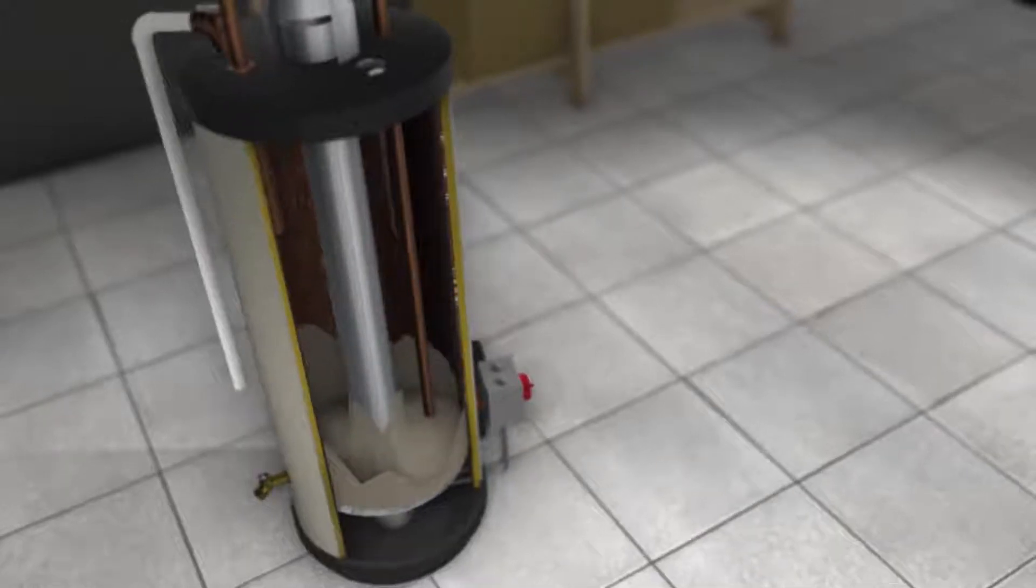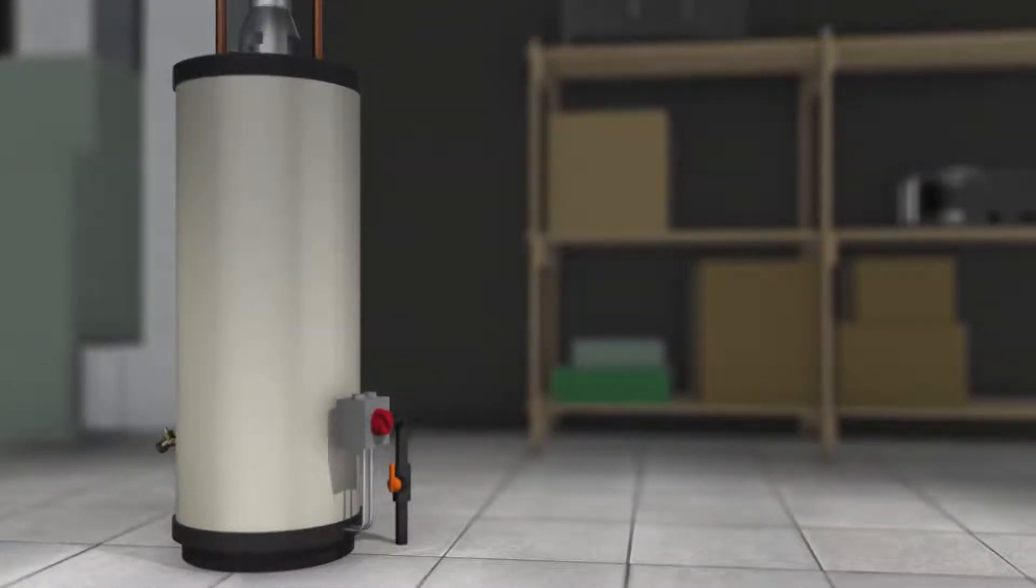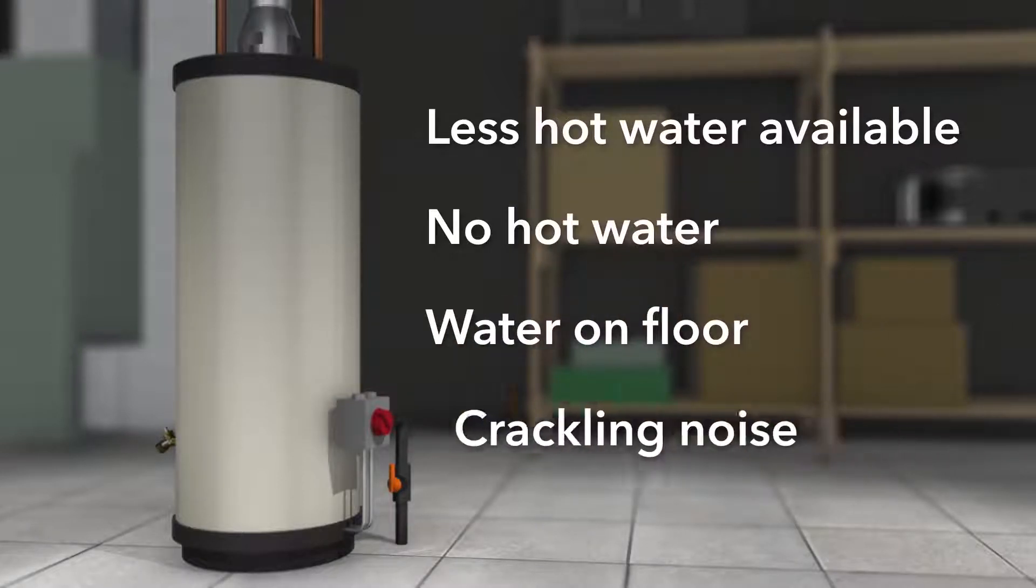How do you know if your water heater might be starting to break down? It gives off some obvious signs, which include: the water heater isn't heating enough hot water, there's no hot water at all, water drips or leaks on the floor around the water heater, or you hear a crackling noise when it's heating.